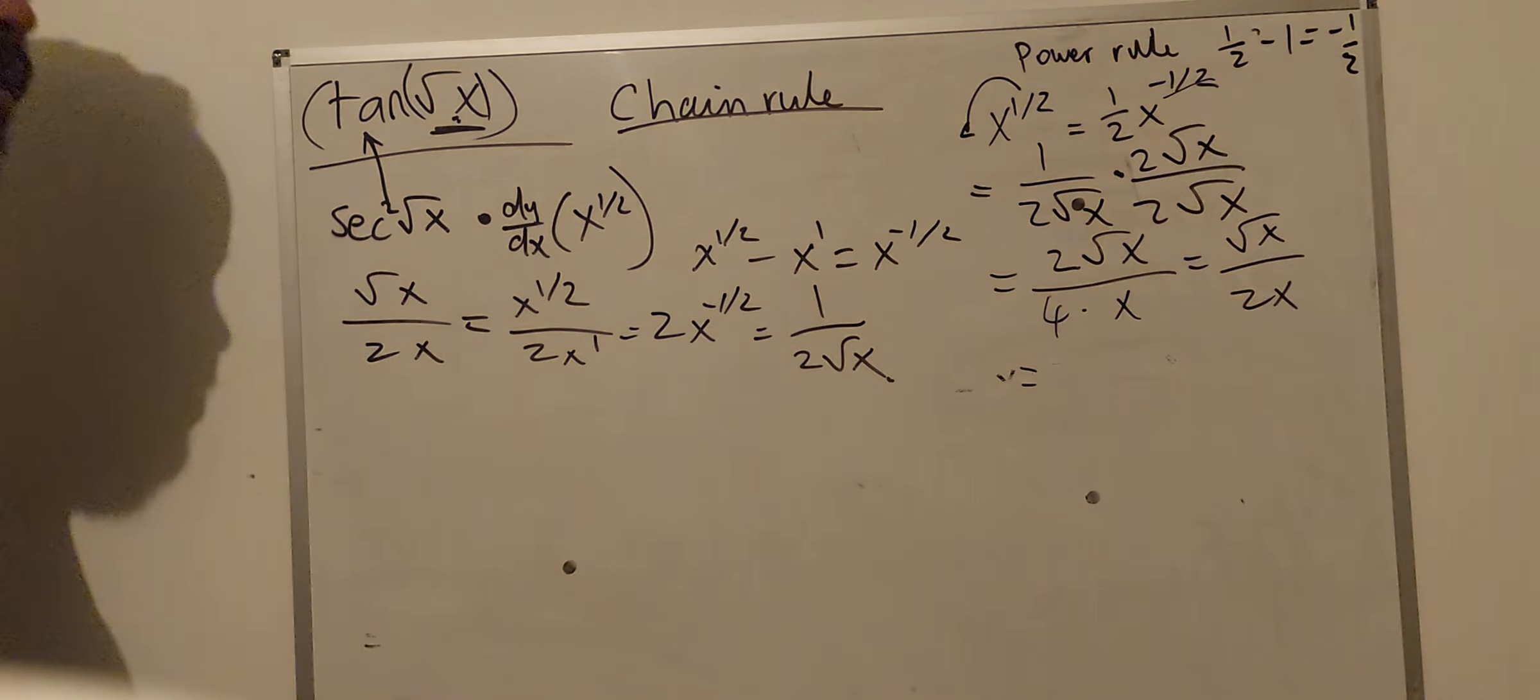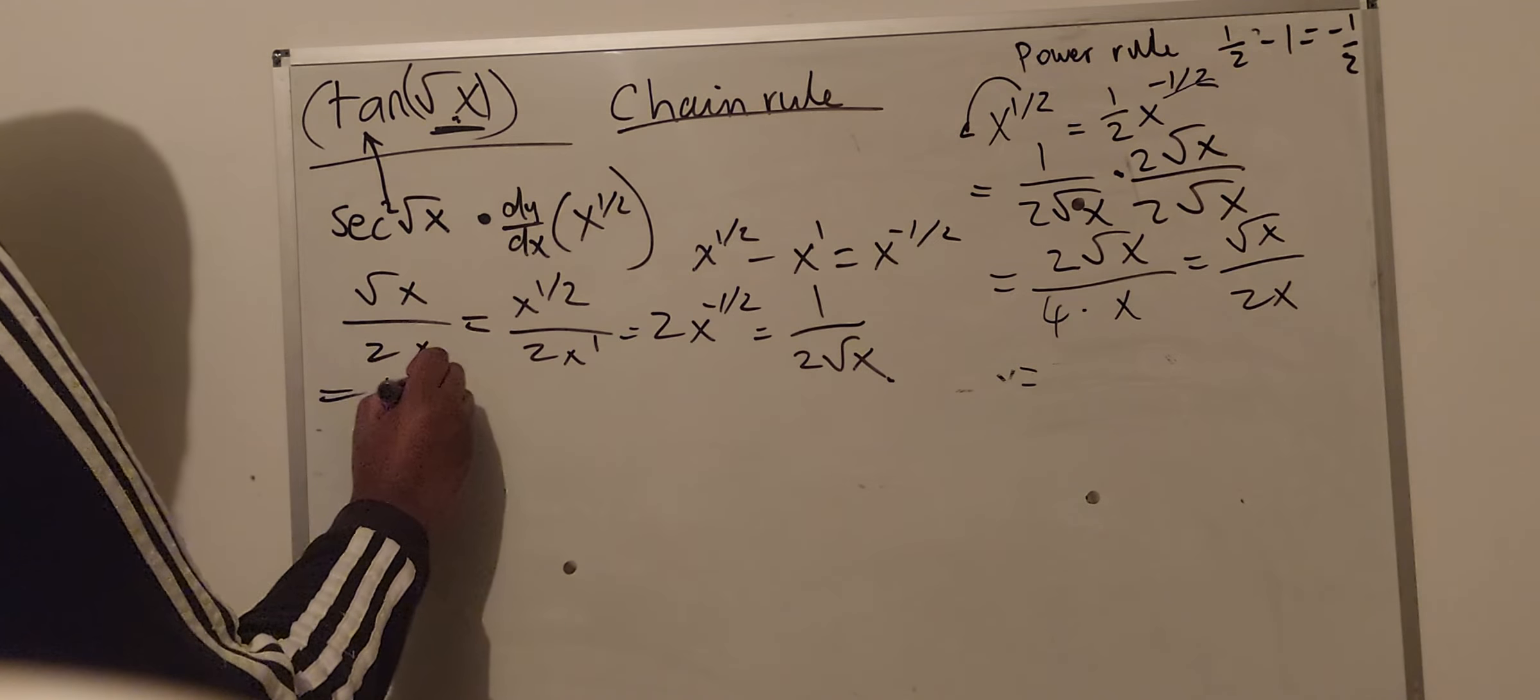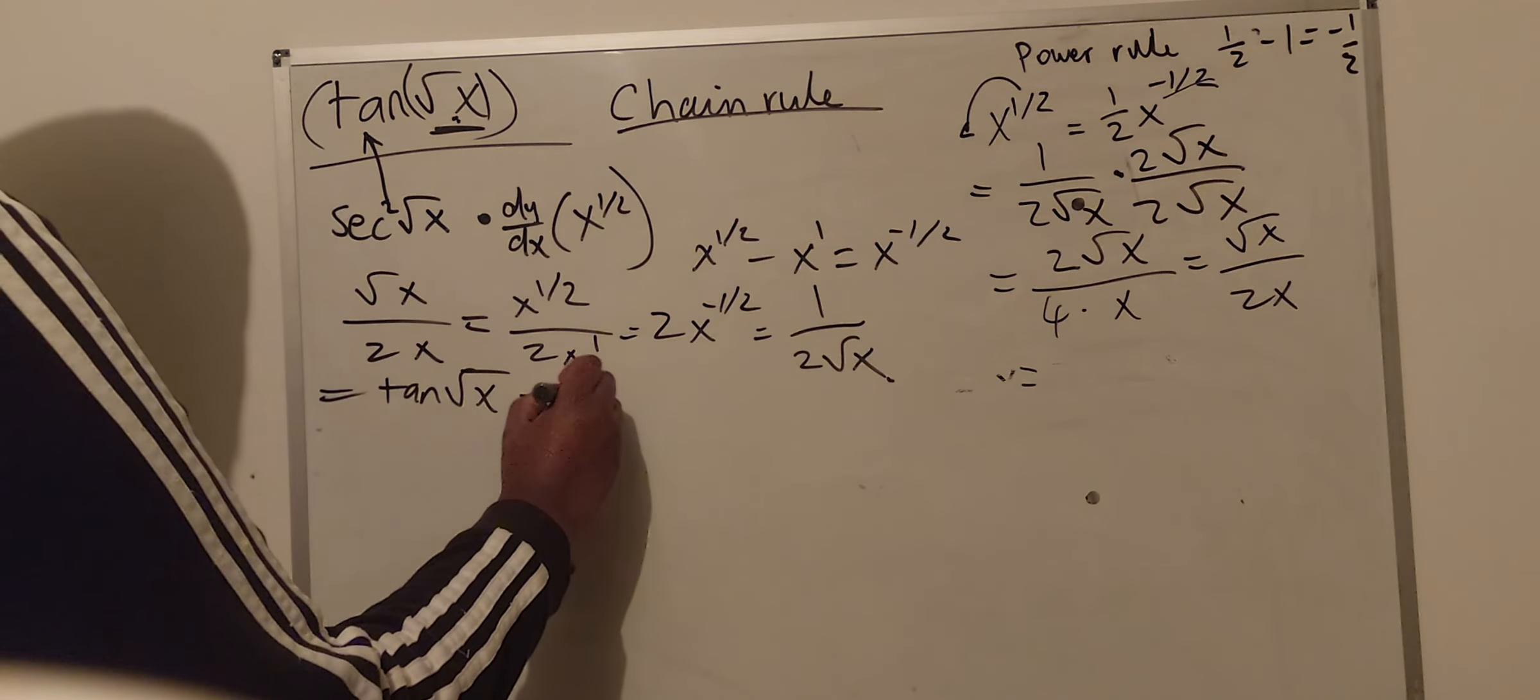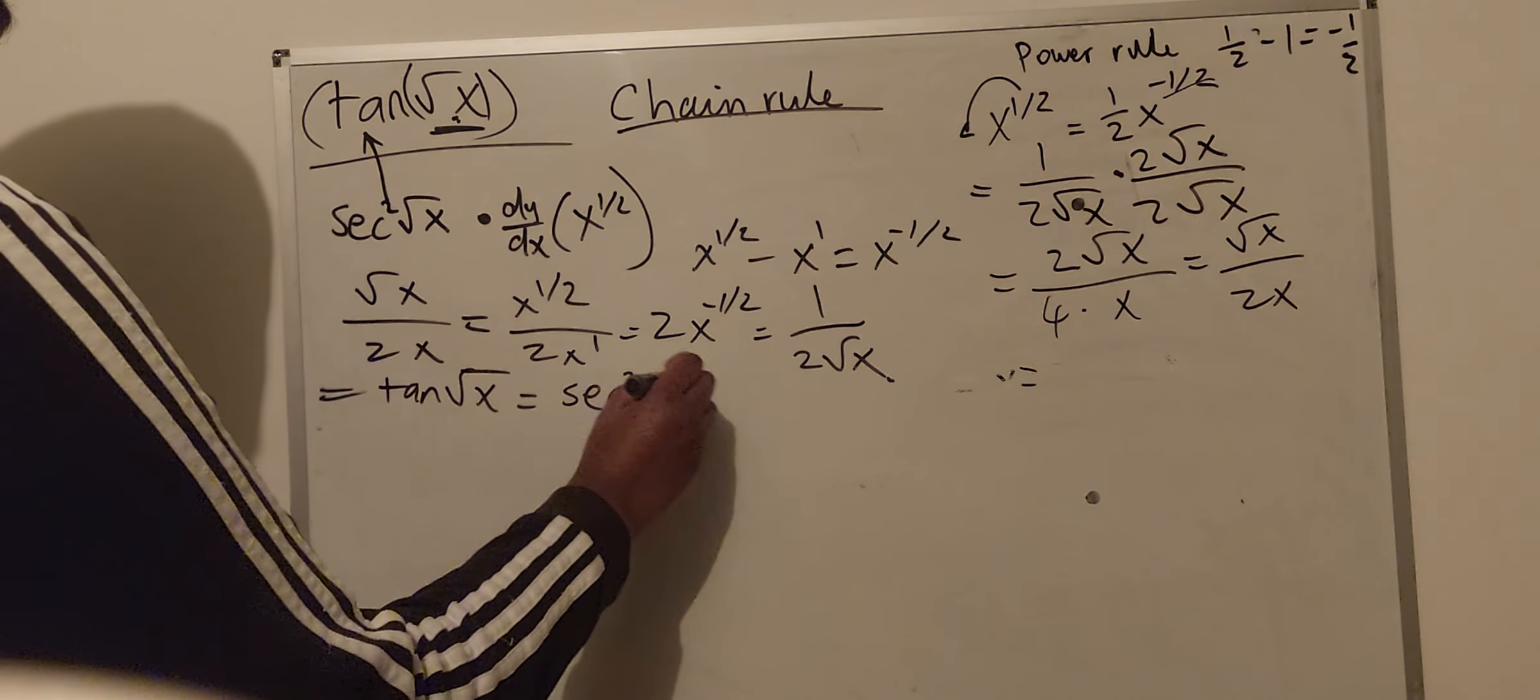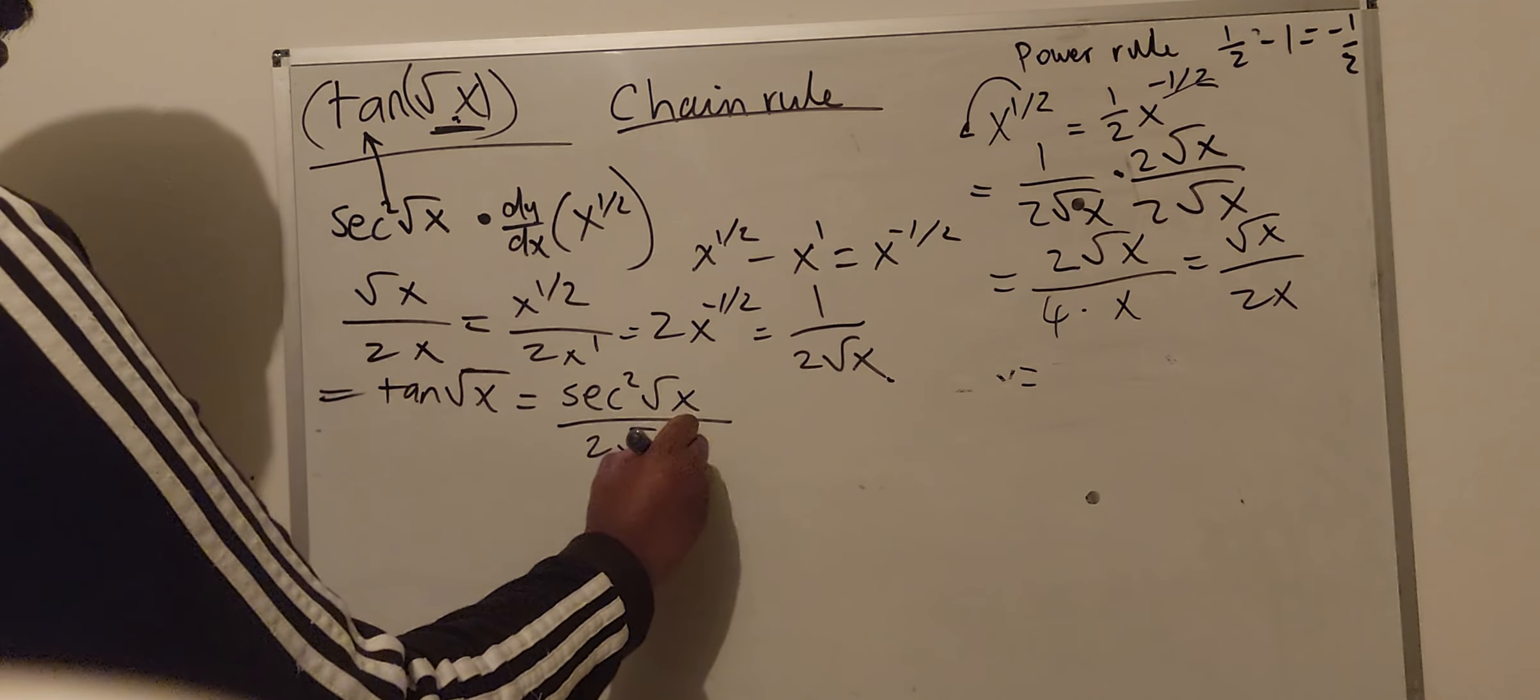So basically, you just proved it, but you didn't really get any closer, which means that this is the value that we're supposed to move forward with. So the answer to this question is going to be tan square root x is equal to secant squared square root of x divided by 2 square root x.